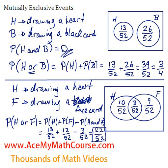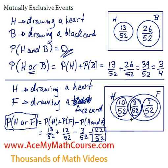Does this make sense? Another way to figure this out: P(H or F) can be calculated by just adding all the components — 10 plus 3 plus 9 is 22, all over 52, and that represents P(H or F): the probability of drawing a heart or drawing a face card.